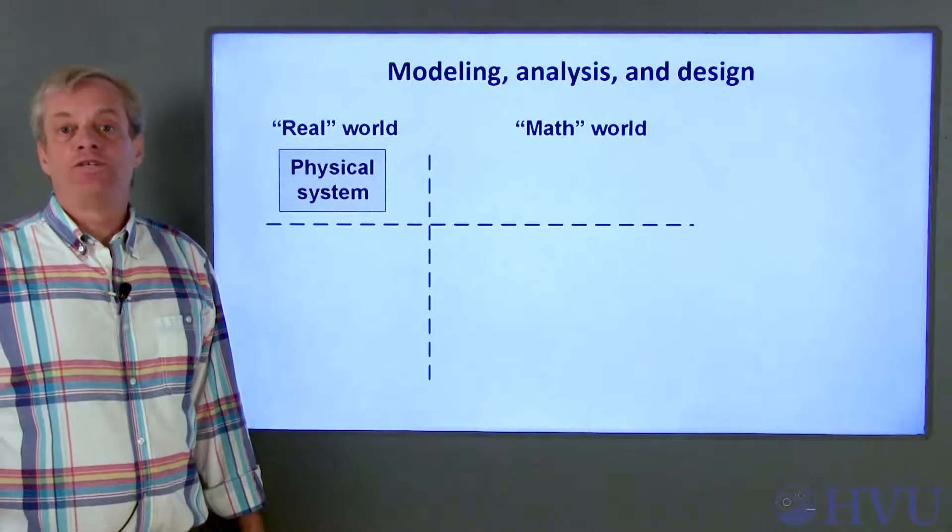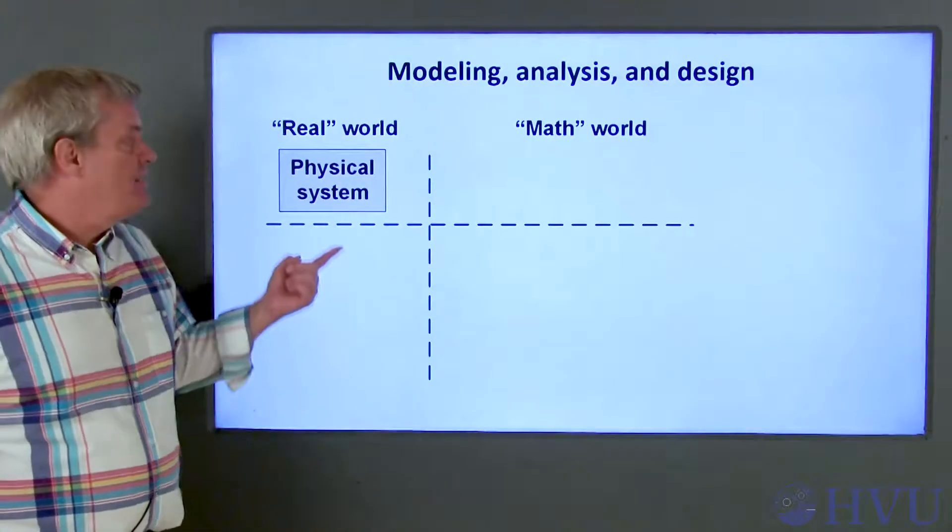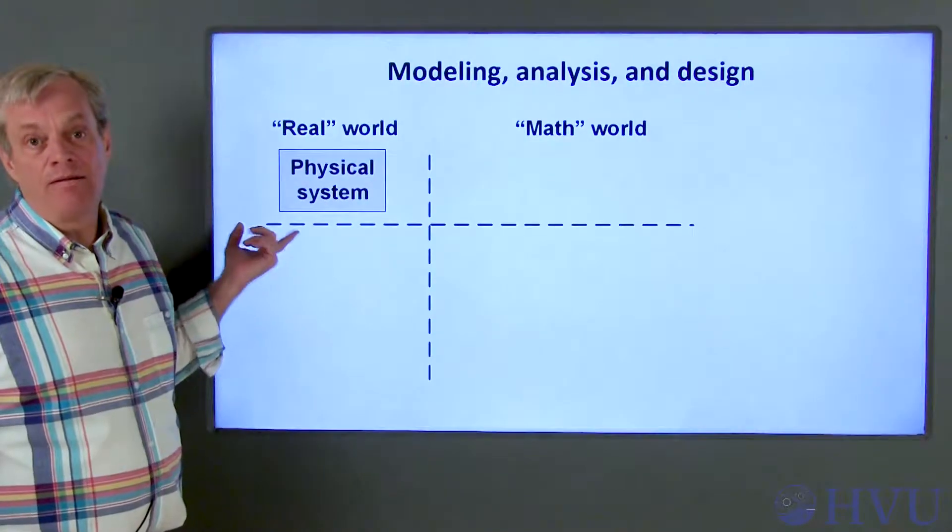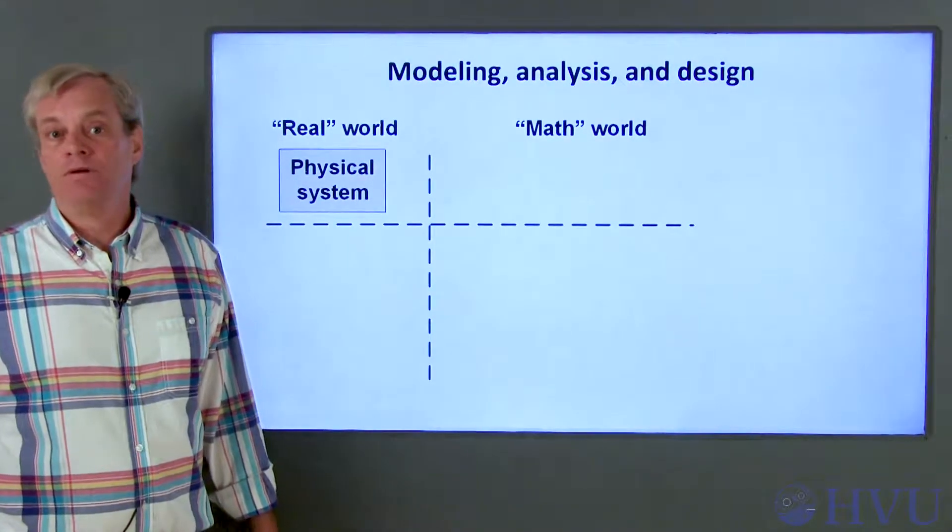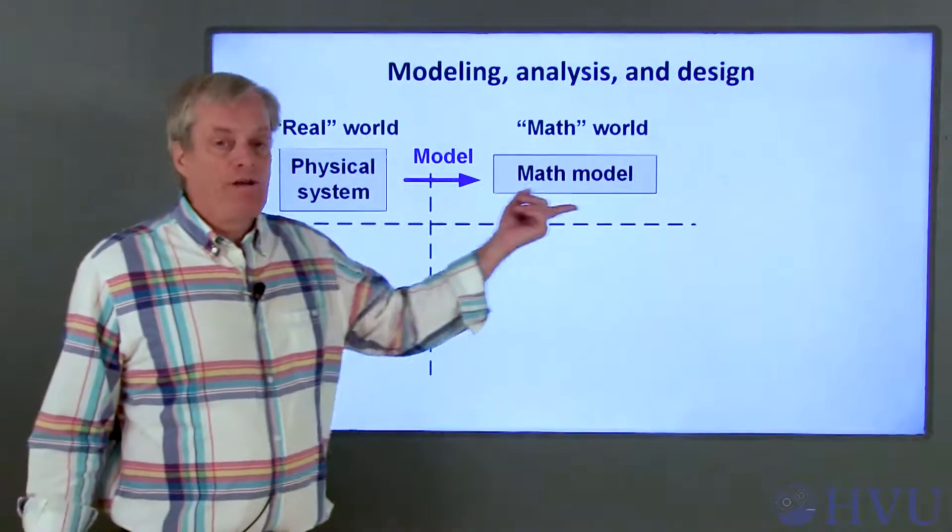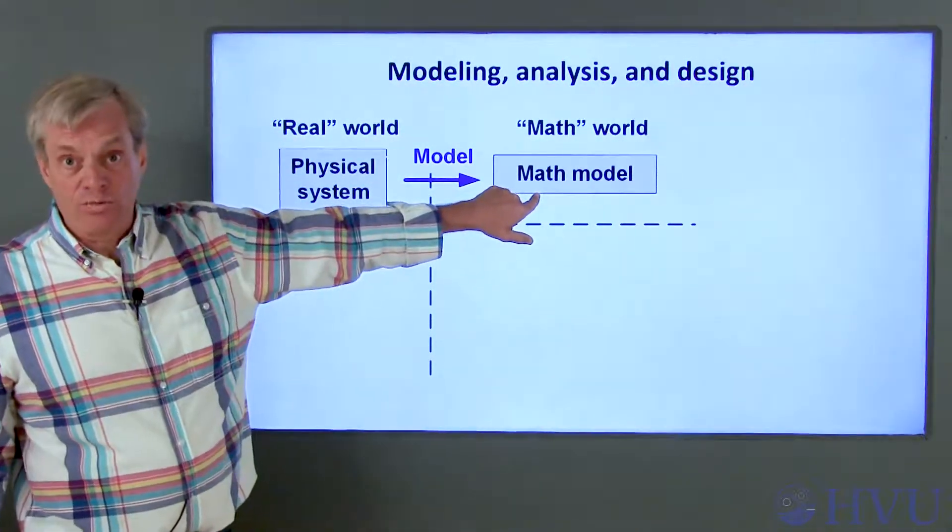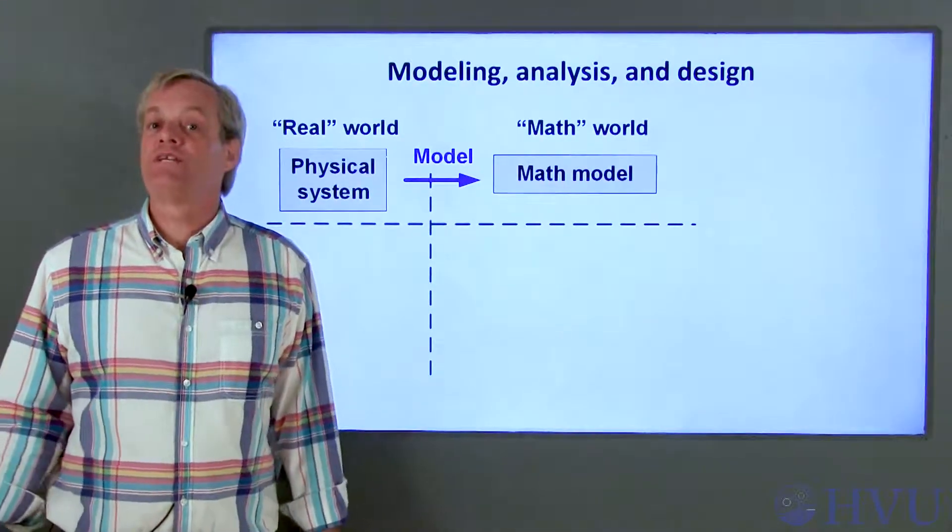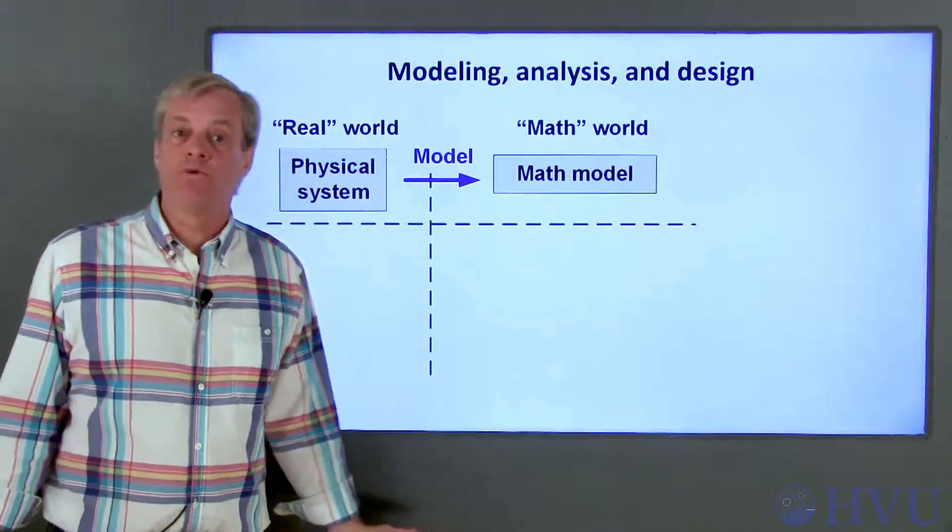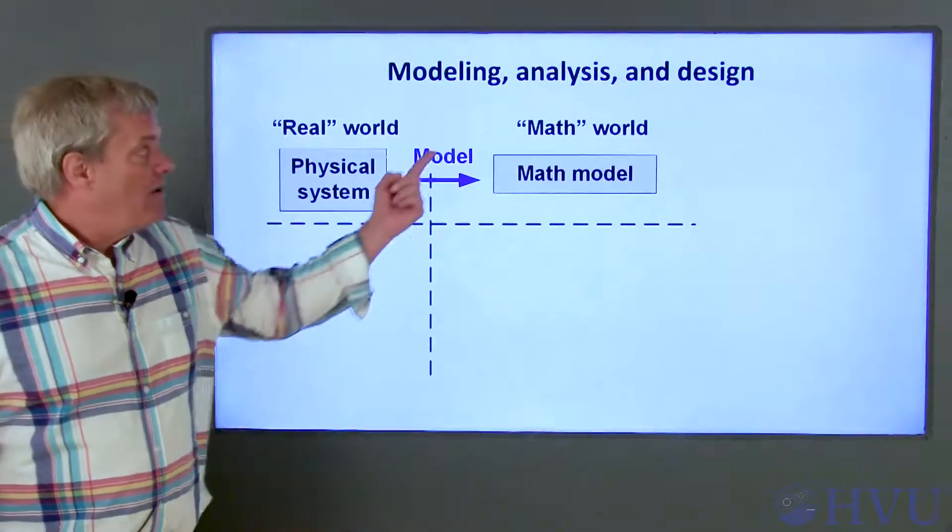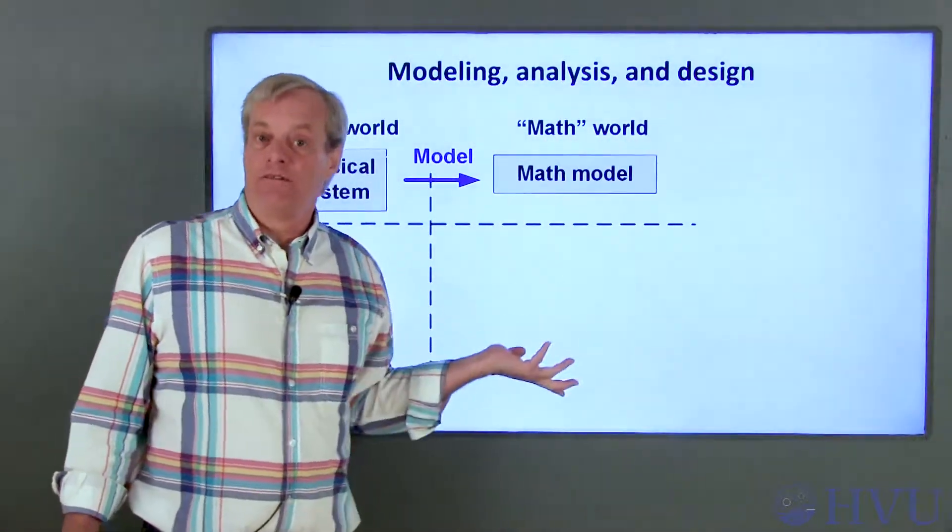The engineering process usually starts with at least some idea of what the physical system looks like. This might be a preliminary design, for example. We usually start by creating a mathematical model of this system. This model is also preliminary, and it represents our first guess as to what we think will be important about this system. We're now in mathematics land rather than in the real world.